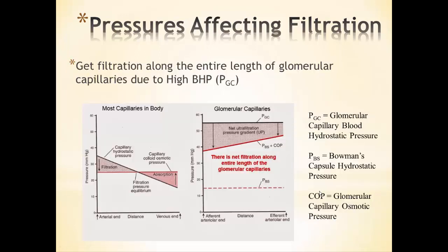That pressure is extended all the way along the glomerular capillaries because of the high blood hydrostatic pressure. In regular capillaries during capillary dynamics, blood hydrostatic pressure decreases from the arterial to the venous end, giving equal filtration and reabsorption. But here in the glomerulus, blood hydrostatic pressure remains greater than osmotic pressure all the way along the entire length of the glomerular capillaries. Therefore, we get filtration the entire length.